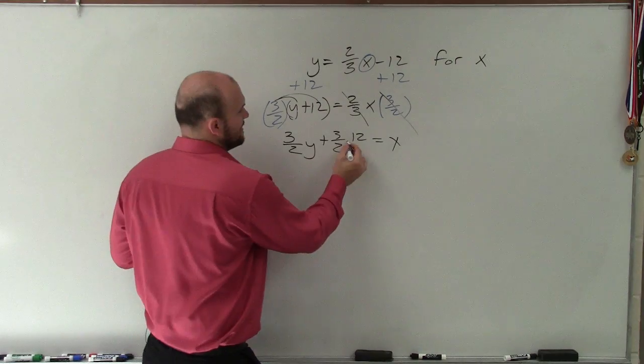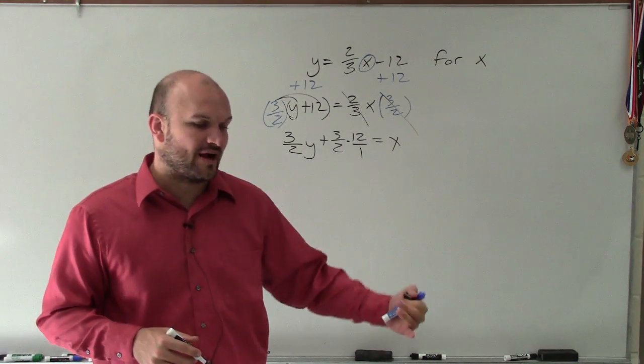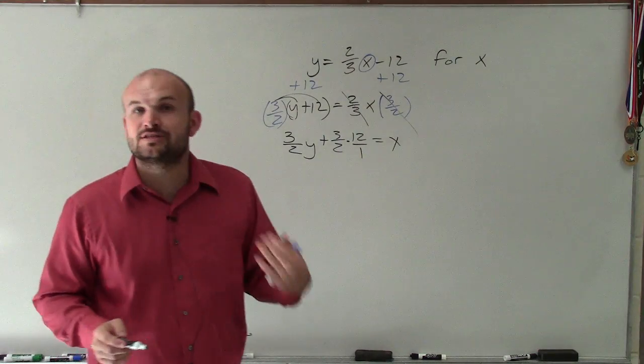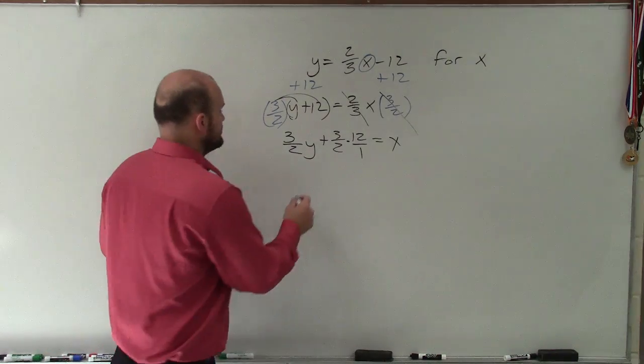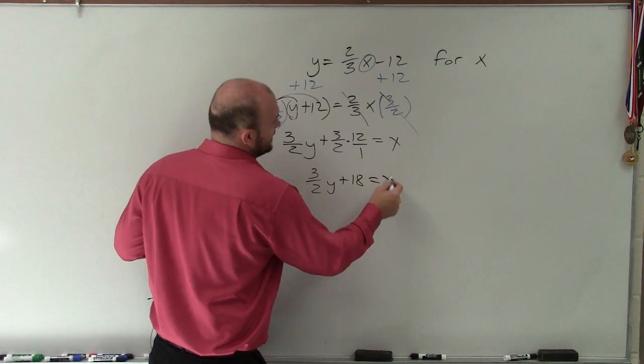Now, if I'm going to multiply 3 halves times 12, rewrite that as 12 over 1. So therefore, you see it's a fraction times a fraction. You can multiply across. 3 times 12 is going to be 36. Divided by 2 would be 18. So I actually have 3 halves y plus 18 equals x.